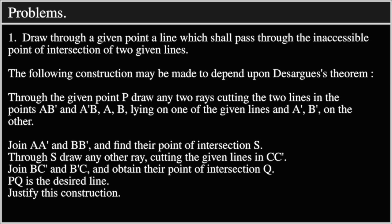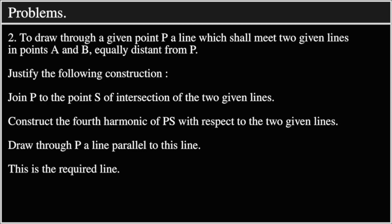Justify this construction. Problem 2: To draw through a given point P a line which shall meet two given lines in points A and B equally distant from P. Justify the following construction: Join P to the point S of intersection of the two given lines.